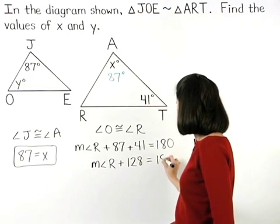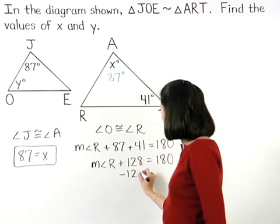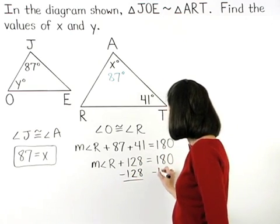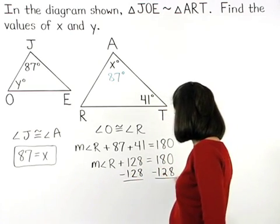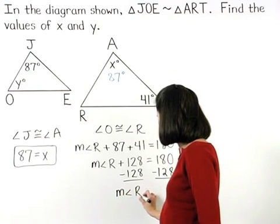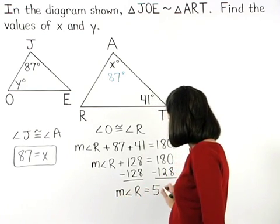equals 180. And subtracting 128 from both sides, we find that the measure of angle R is 52 degrees.